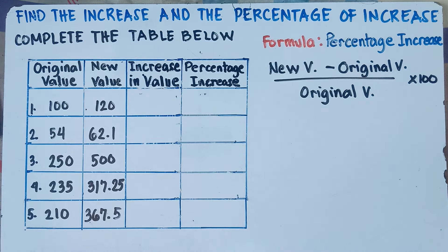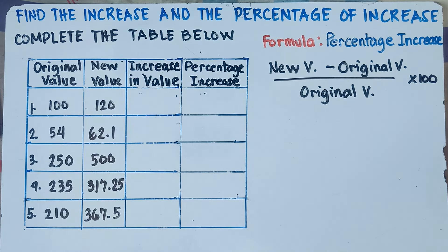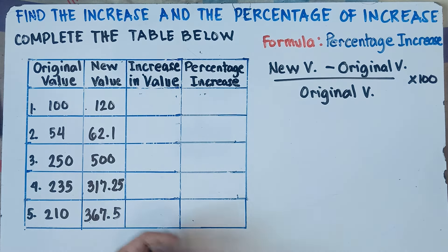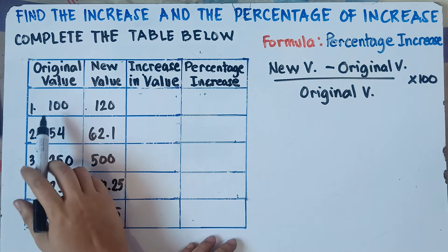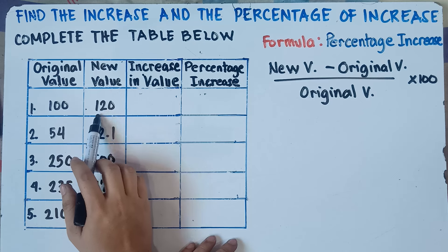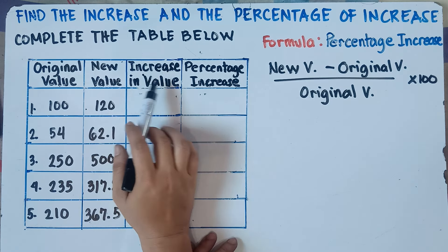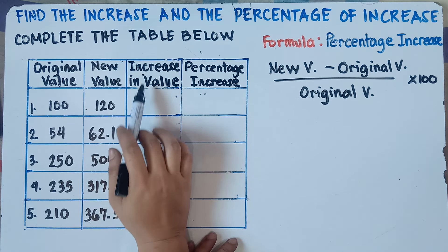Let's focus first on part one. We have the given original value and the new value. So number one: original value is 100, new value is 120, and we're told to find the increase in value.